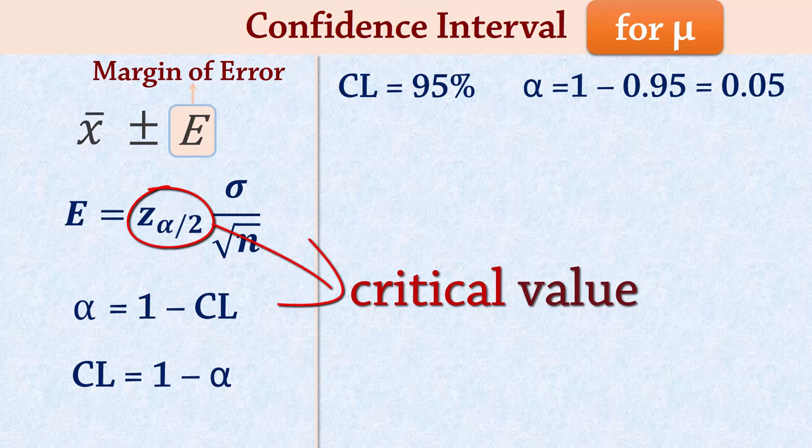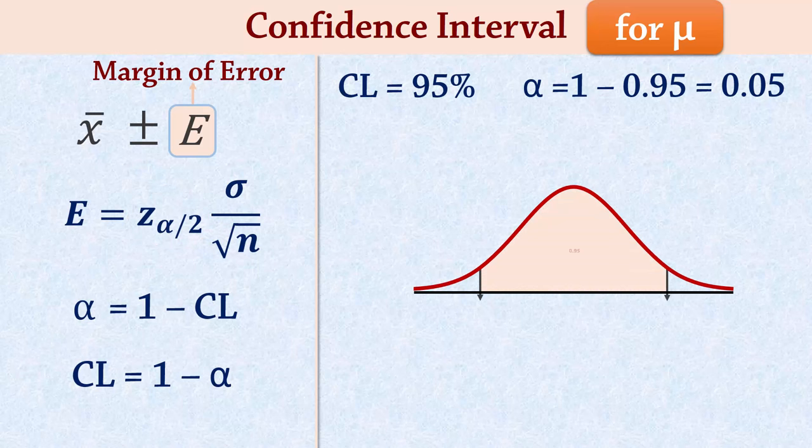When constructing a 95% confidence interval, for example, the confidence level 0.95 is in the middle of the distribution, and the remaining 0.05 alpha is divided equally into the 2 tails as 0.025 each.